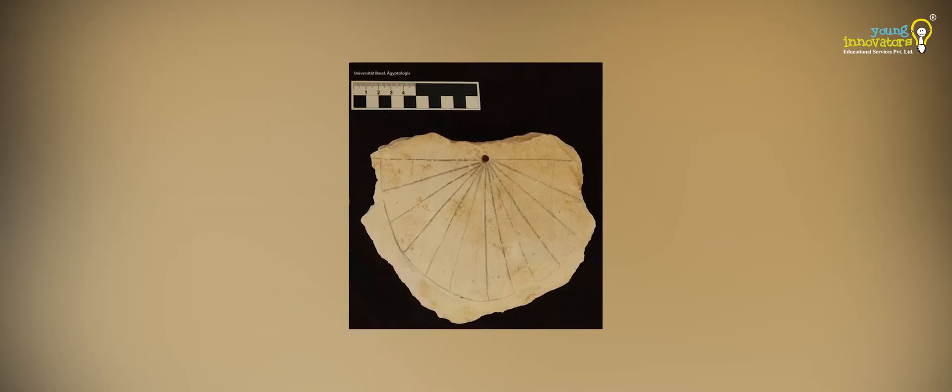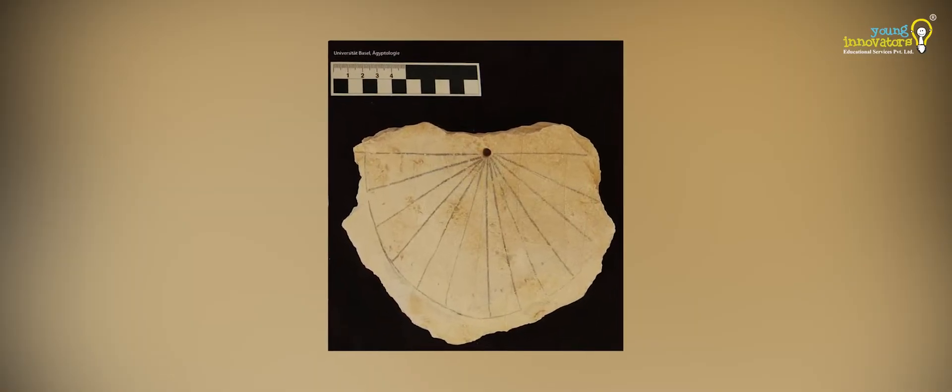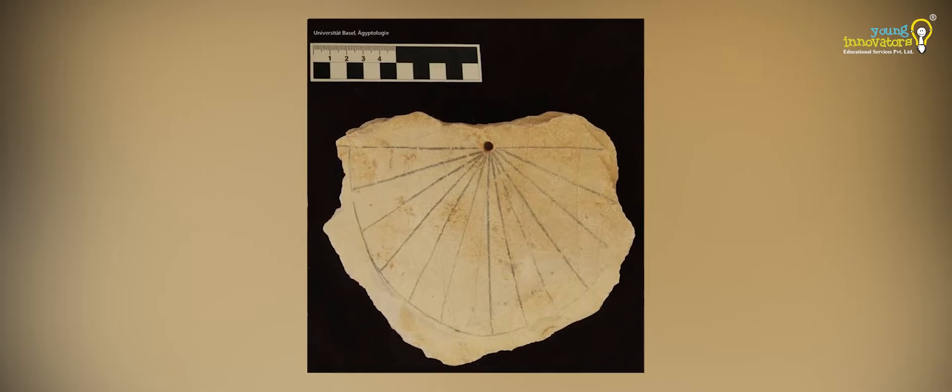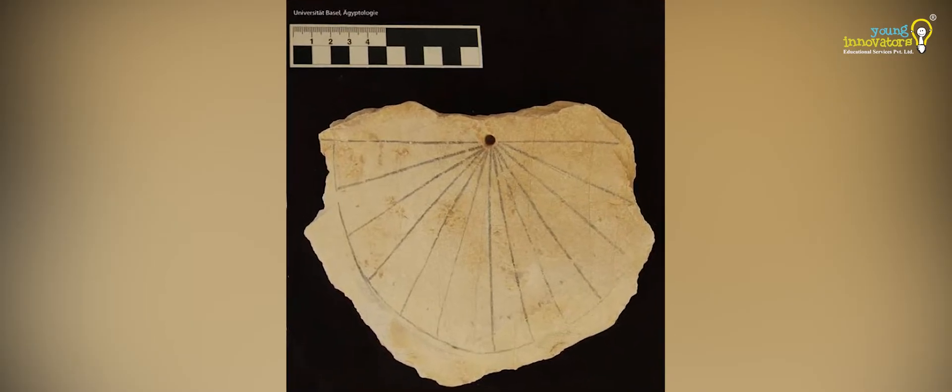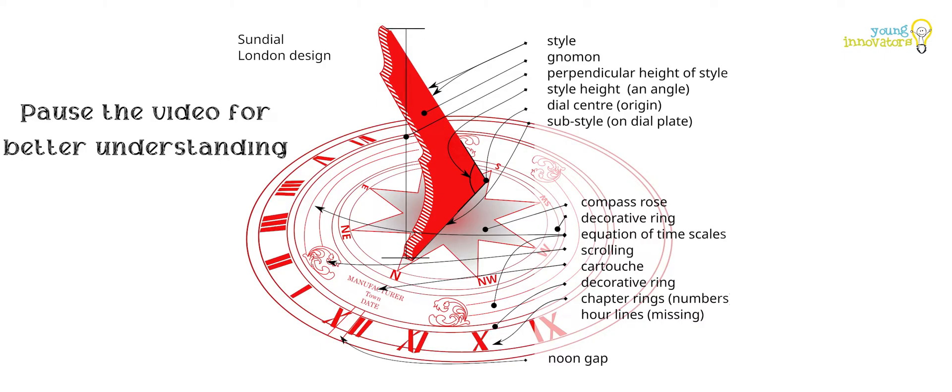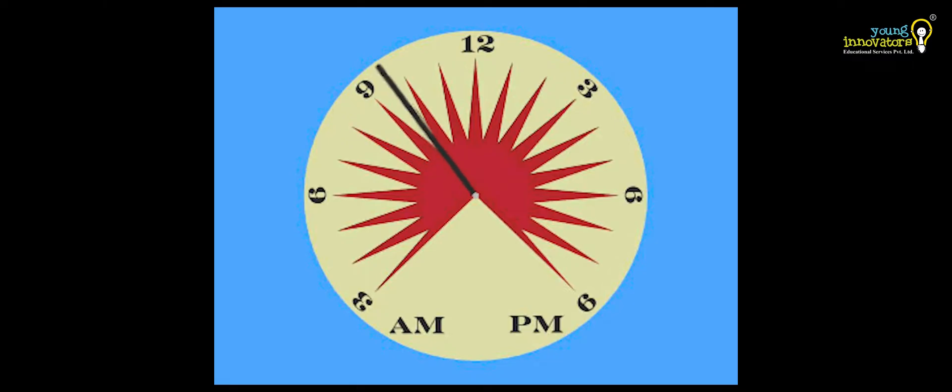One of the earliest solutions was the sundial, invented around 1500 BCE in ancient Egypt. A sundial uses a central pointer, called a gnomon, which casts a shadow on a marked dial as the sun moves across the sky.